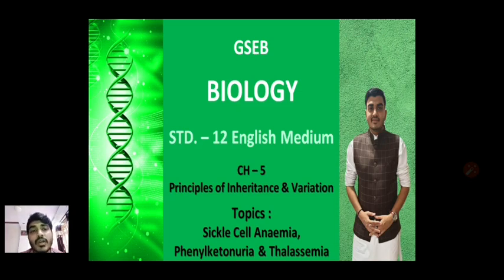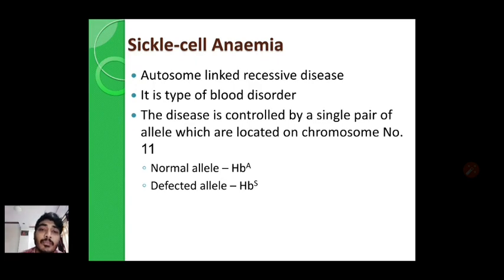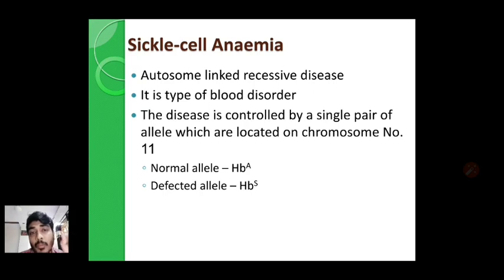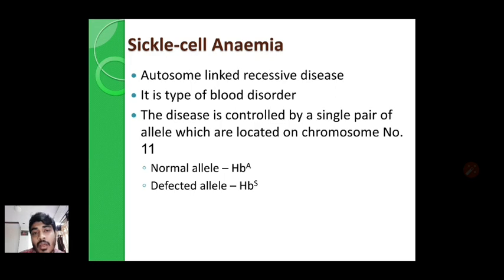First we start with sickle cell anemia. Sickle cell anemia is a type of autosome-linked recessive disease. Autosome-linked recessive disease means it involves the recessive allele which is present on autosomes. That means here the recessive allele gets mutated, and that mutated recessive allele is present on the autosome. Sickle cell anemia is a type of blood disorder.